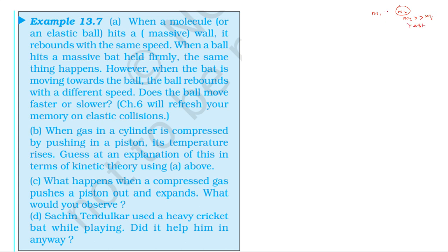In the case of the lighter mass M1, just before the collision its speed is u, and just after the collision the speed is also comparable. The continuous mass is very much greater, meaning M2 is very much greater than M1. The entire heavier mass moves such that its own velocity change is very small.